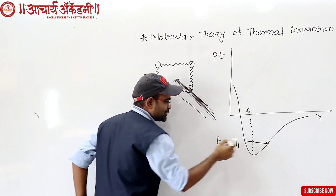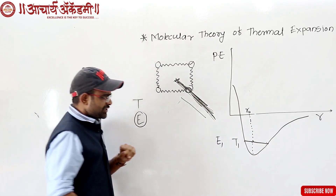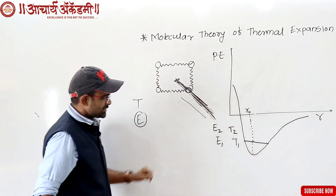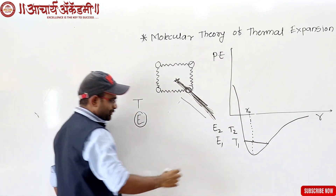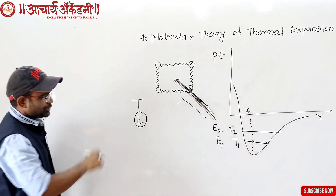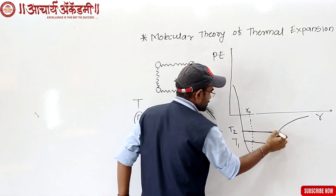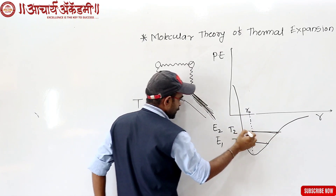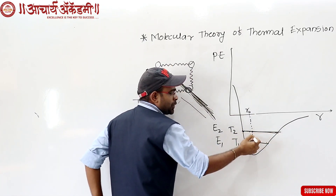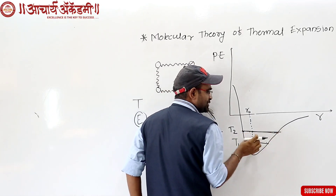The molecule is here at the center — this is the mean position. At temperature T2, the potential energy is E2. The molecule vibrates — zoom zoom. The mean position shifts towards one side. When moving away from center versus towards center, the molecule travels extra distance in one direction.